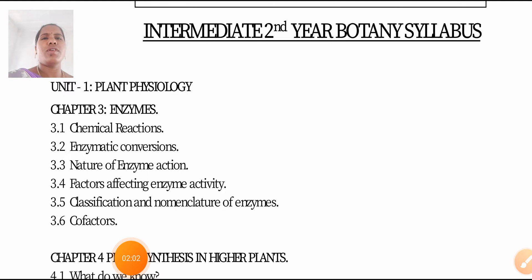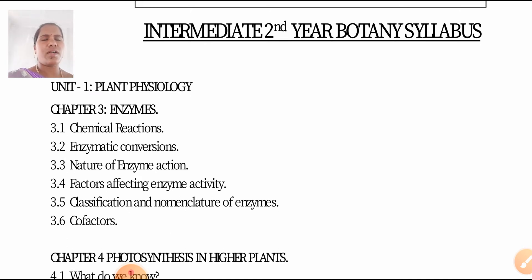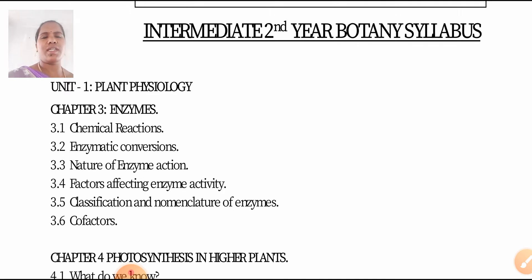Unit 1 Plant Physiology, Chapter 3 Enzymes: chemical reactions, enzymatic conversions, nature of enzyme action, factors affecting enzyme activity, classification, nomenclature of enzymes, and cofactors. You can find this in my channel in the printed format — choose Unit 1, end of Chapter 3, and any doubts can be raised at that time.